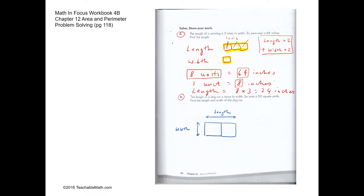For question 3, the length of a dog run is twice the width. So we have two units for the length and one unit for the width. The area is 50 square yards. If the whole thing is 50 square yards, one half must be 25 square yards and the other half must also be 25 square yards.